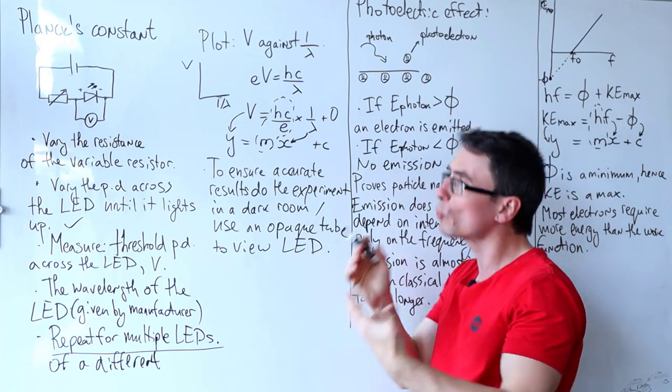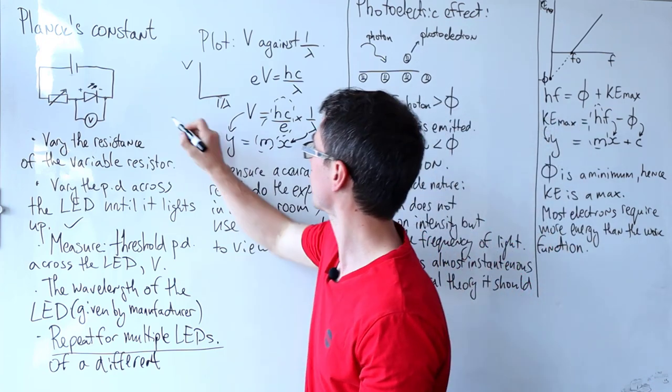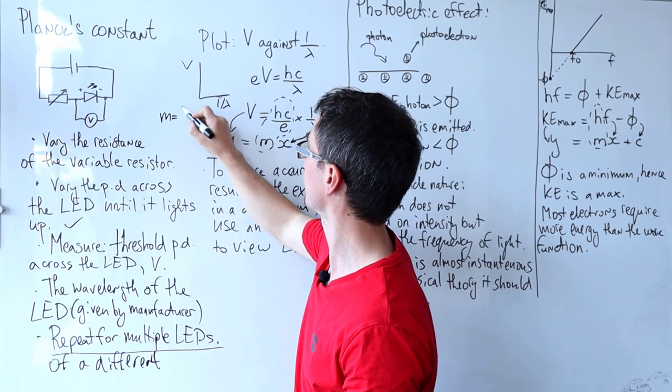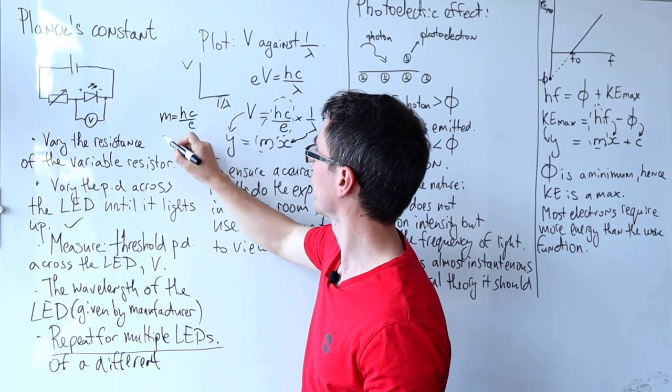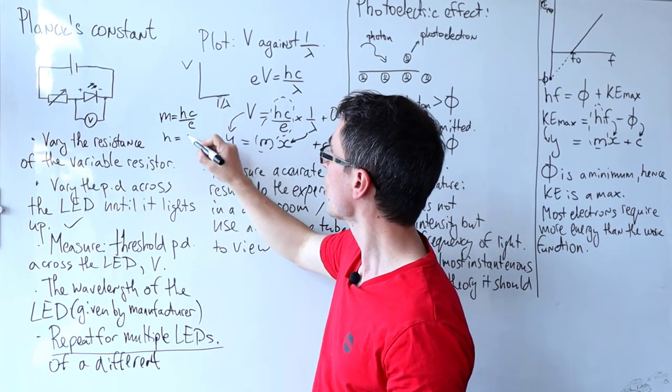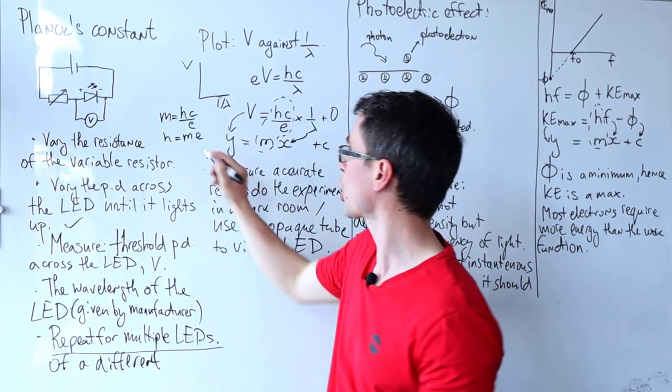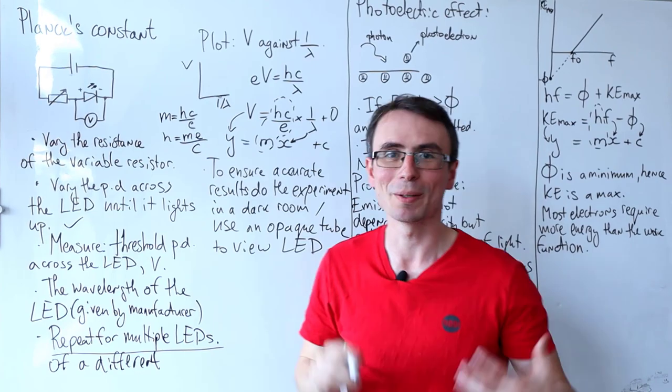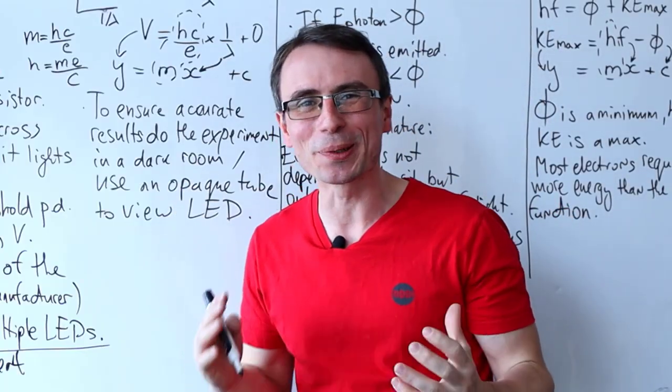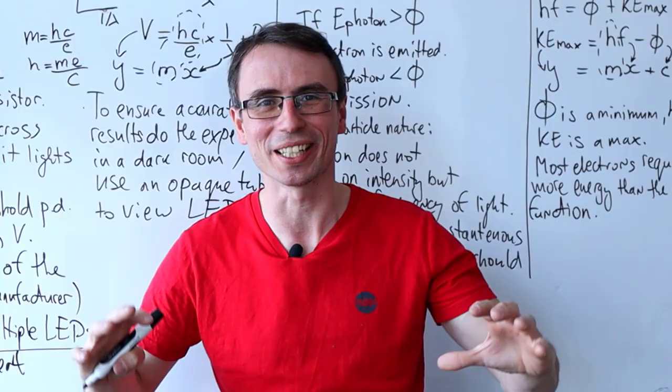Now our final step would be to rearrange for Planck's constant. So m equals hc over e. This of course means that h will be given by our gradient times the elementary charge divided by the speed of light. So many fundamental constants in this equation, I love it.